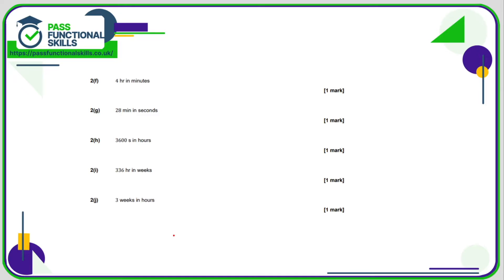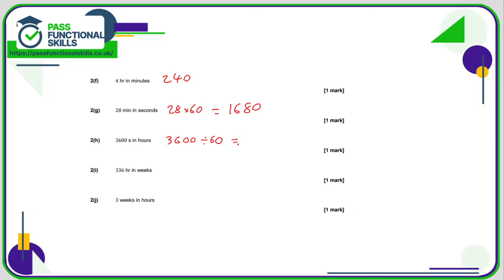Three years is three lots of 12 which is 36 months. Four hours in minutes: one hour is 60 minutes, so four hours is four times 60, which is 240 minutes. 28 minutes in seconds: that's 28 lots of 60, and using a calculator that's 1680 seconds. For 3600 seconds in hours, I would turn the seconds into minutes first: 3600 divided by 60.